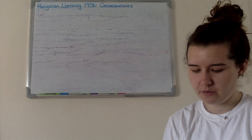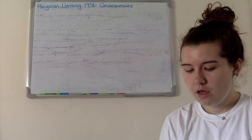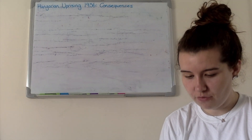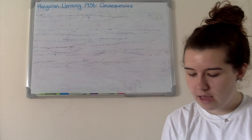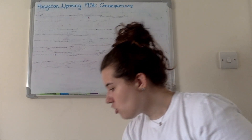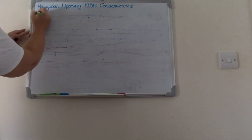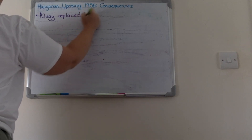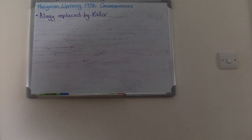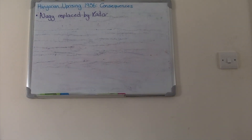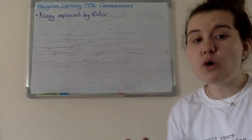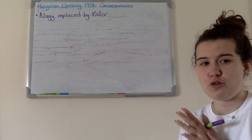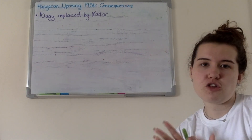So what actually happens? After the ceasefire is agreed, the Soviets want to get rid of Nagy — he is their main target. They replace Nagy with a guy called Kadar. Kadar is much more hardline, a much stricter guy, and much more of what Khrushchev wants in a leader. He won't stray too far from what Khrushchev wants — he is very loyal and a much more suitable candidate.